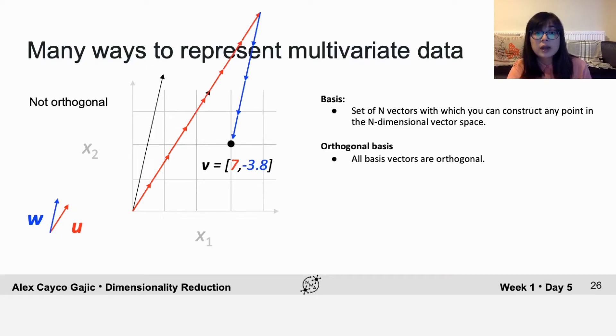You can also have a basis where the vectors are not orthogonal. So here's an example of that, but you can still represent each point in the two-dimensional plane as a combination of these two vectors.